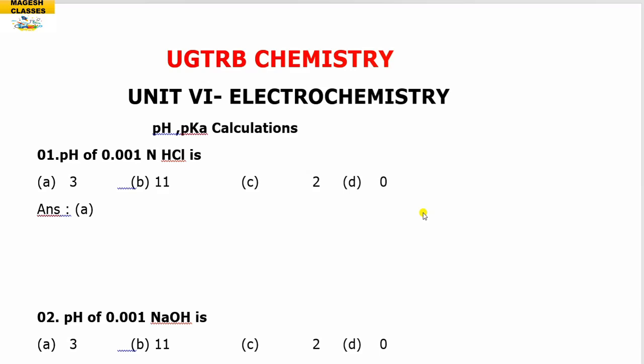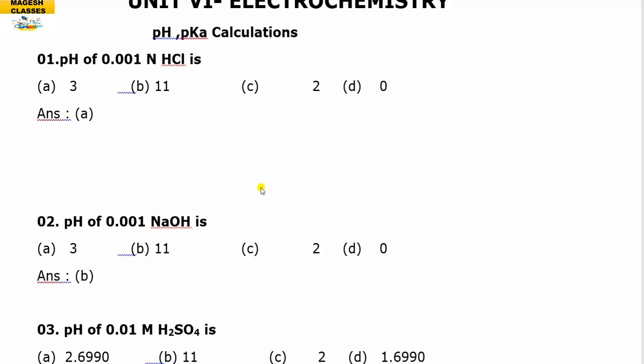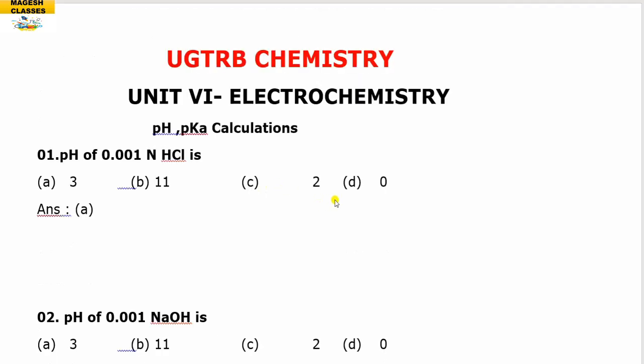Hello viewers, welcome to my guest chemistry classes. This is UGTRB chemistry unit number 6 — electrochemistry, pH and pKa calculations. We have already conducted the Google Form test for this topic. Now we are going to discuss the solution part of the questions.